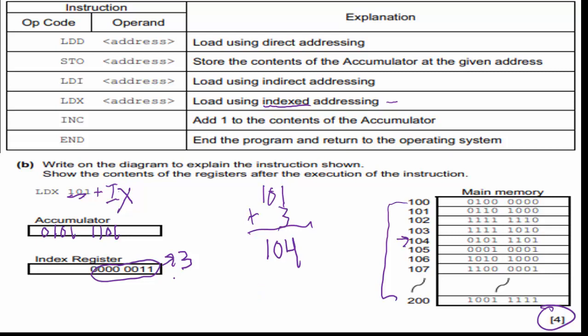You need to calculate the value of the index register, add it onto the address they gave us — which was 101 — to get address 104, actually show address 104, then pull those contents out and put them inside the accumulator. You need to know what index, indirect, and direct addressing are, and we'll go over all of those today.